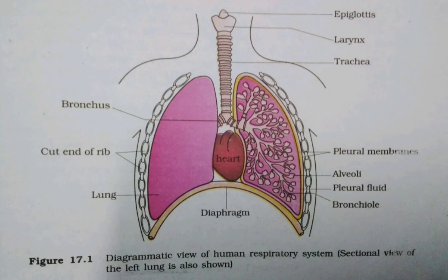Respiratory rhythm is maintained by the respiratory center in the medulla region of the brain. The pneumotaxic center in the pons region of the brain and the chemosensitive area in the medulla can alter specific respiratory mechanisms.